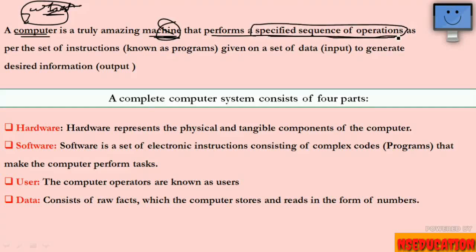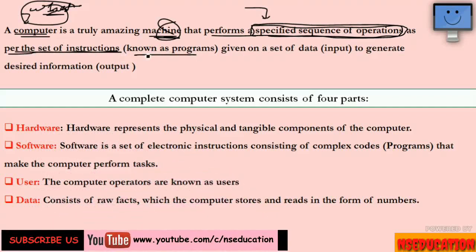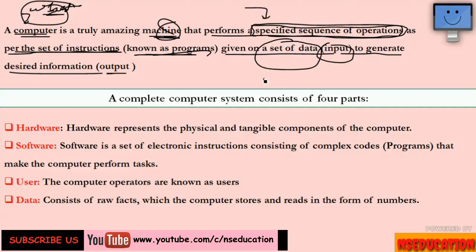Any machine performs a sequence of operations. That sequence of operations comes from the user — the user provides it in the form of a set of instructions, which we call programs. We program the computer and it works accordingly. Input is given as a set of data, and the output is the desired information.